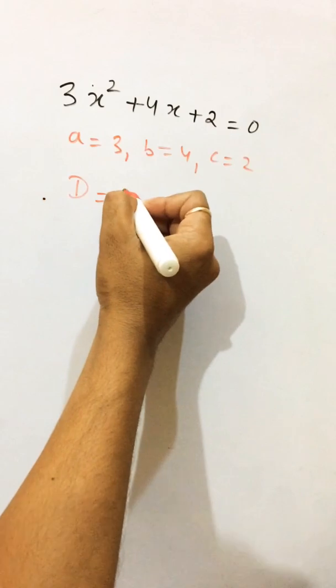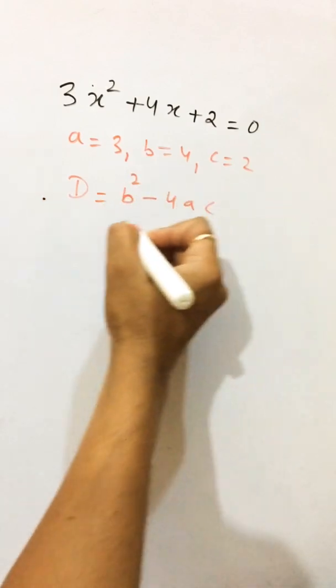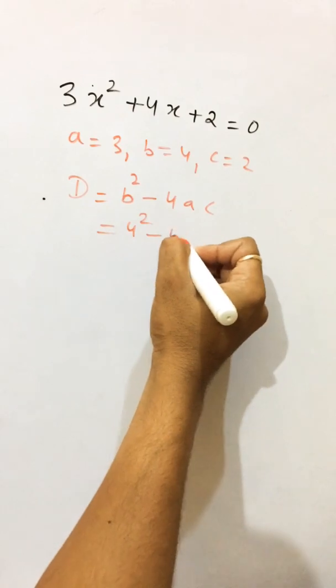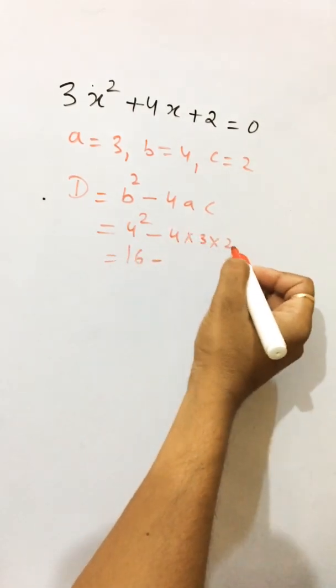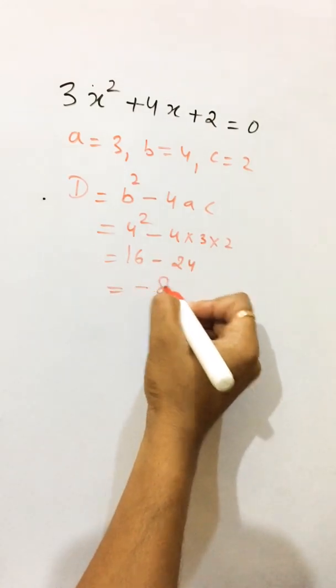If you find the discriminant of this equation, b square minus 4ac, you will get here 4 square minus 4 into 3 into 2, it would be 16 minus 24, and it would be minus 8.